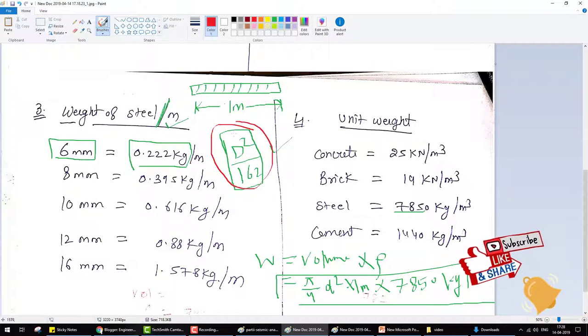Same as 8mm diameter steel of 1 meter length, weight is 0.395 kg per meter. For 10mm, 0.616 kg per meter. For 12mm diameter, 0.88 kg per meter. And for 16mm diameter, 1.578 kg per meter.